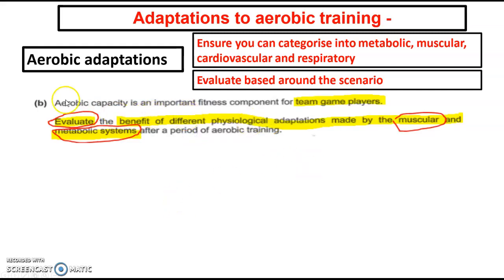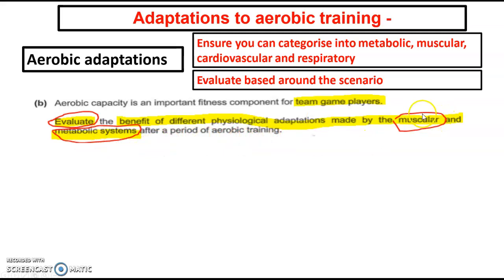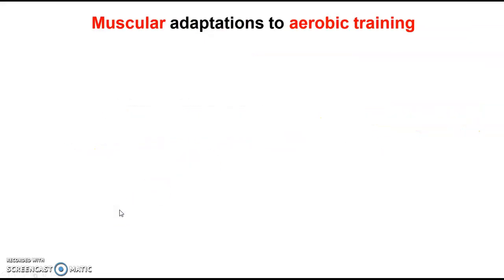The 2019 AS exam asked, after talking about aerobic capacity, for team gauge in this case, to evaluate the benefits — the physiological adaptations, the changes within our body made by the muscular and metabolic systems after a period of aerobic training. As you can see, they could ask you to categorize, and that'll be the heading of each of the slides as we go through.